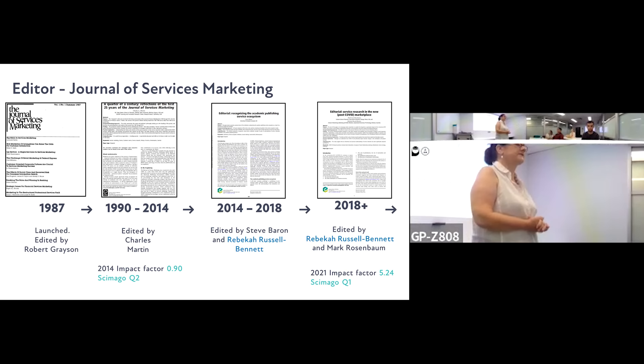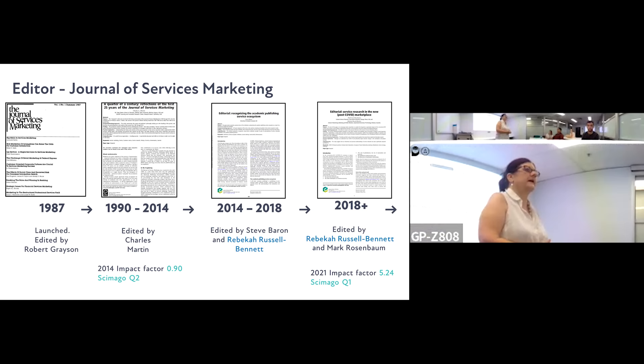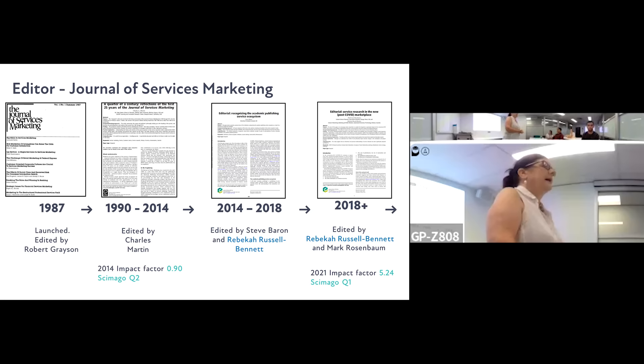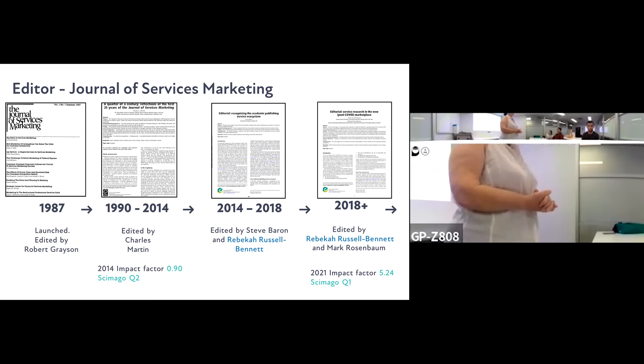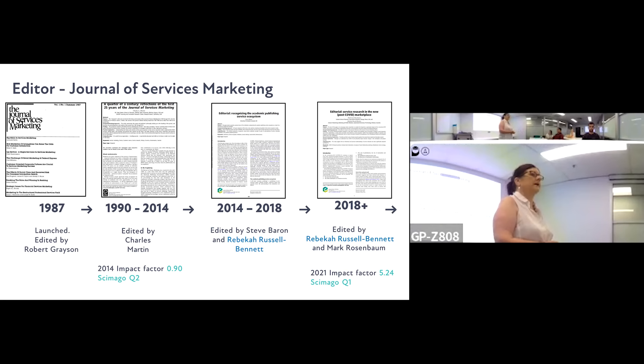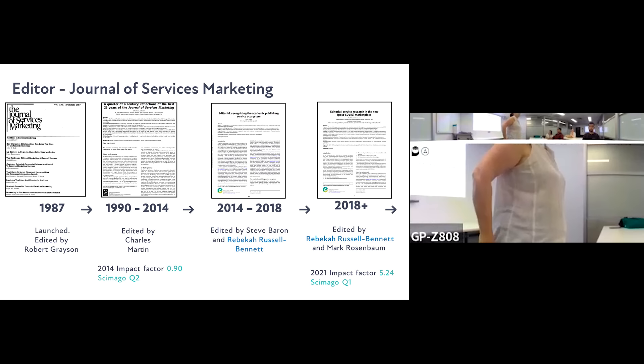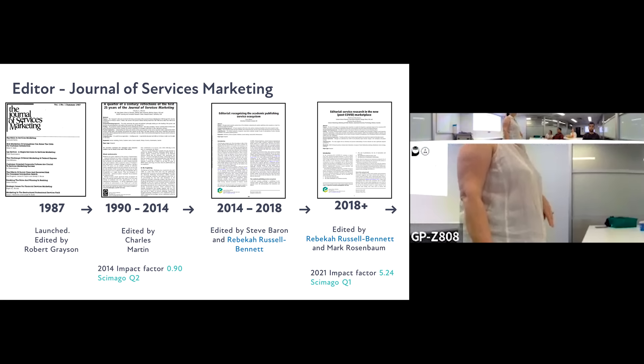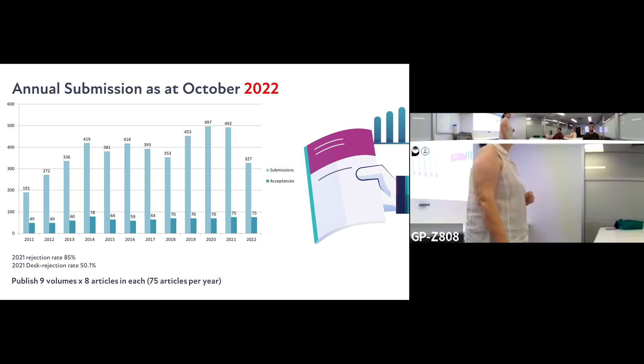My background: I'm the editor, or co-editor, of the Journal of Services Marketing — the oldest services marketing journal in the world, launched in 1986–87. We've had long-term editor Charles Martin, then I came in in 2014 with Steve Barron from Liverpool. Steve retired and was succeeded by Mark Rosenbaum. Our impact factor has gone from 0.9 to 5.24 in only seven years, we've moved from Scopus Q2 to Q1, and it's an A rank in the Australian Business Deans Council list.